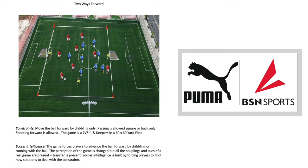In exercise three, again game representative — you can organize this however you want, with or without goals and keepers. There is no forward passing allowed, on angles or straight. The only way to advance the ball is to dribble. This gets people comfortable one-on-one, beating players. They can pass the ball back and square, but the only way to advance is to beat someone one-on-one or to shoot at goal.